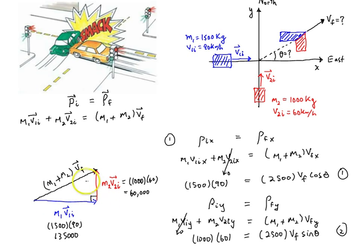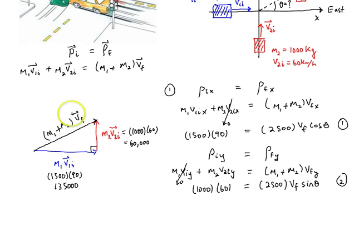So, in reality, you know this side and this side, and so you could find this side by using Pythagorean theorem. So, the momentum of this final momentum, m1 plus m2 v final as a vector, is equal to the square root of 135,000 squared plus 60,000 squared. And so, then you could substitute in this mass as well. So, v final would be that result divided by the total mass, which is 1,000 plus 1,500, which is 2,500.